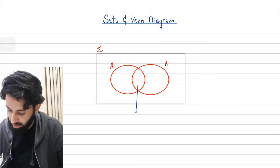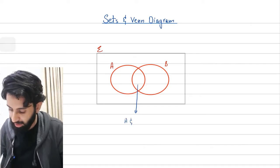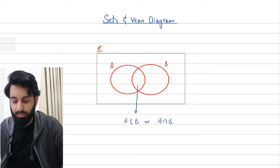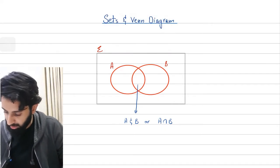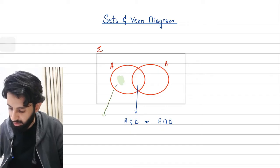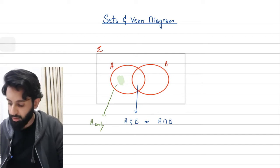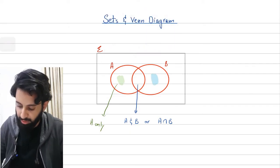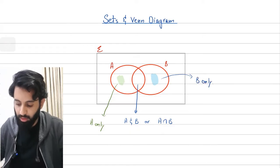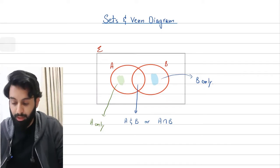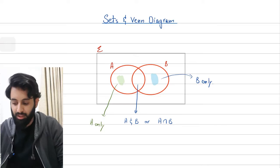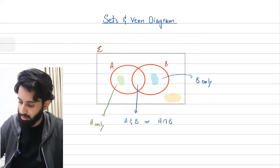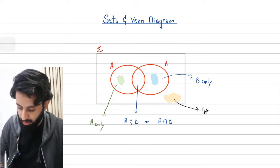The overlapping region represents elements that are common in both — we call that A intersection B. The region I'm highlighting in green represents A only, meaning elements present in A but not in B. The region in blue represents elements present in set B only. And there are likely to be elements outside of A and B that are inside the universal set but neither in A nor in B — I'll highlight that in orange. This represents neither A nor B.